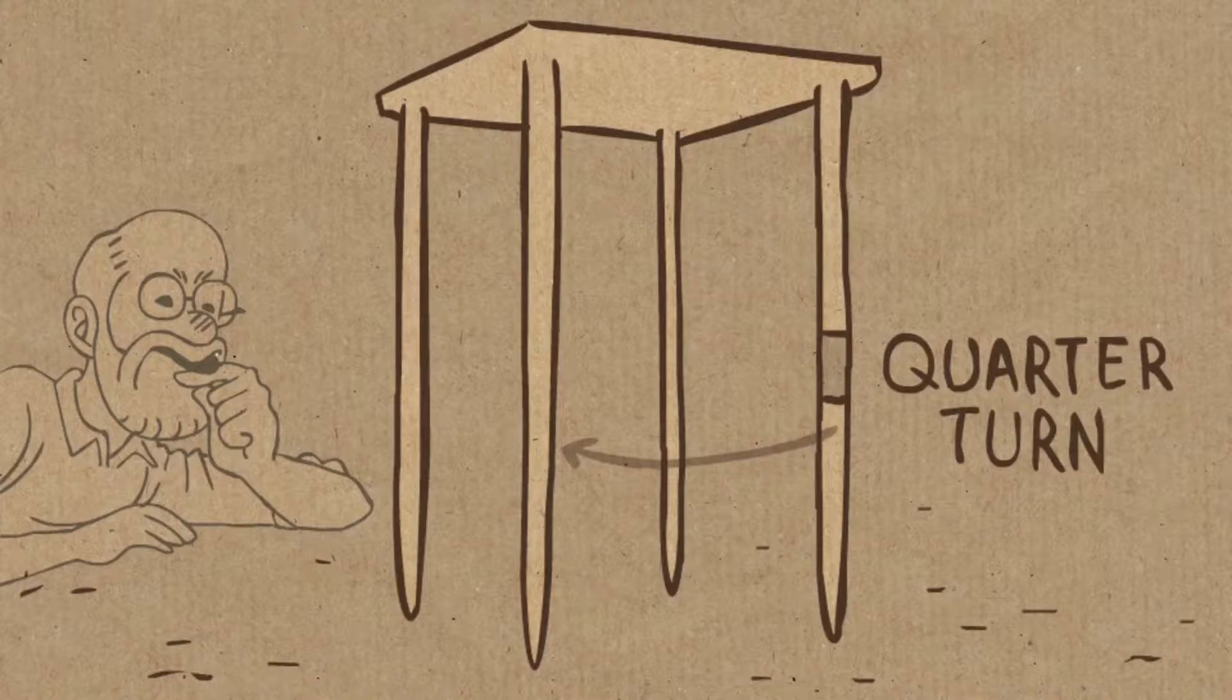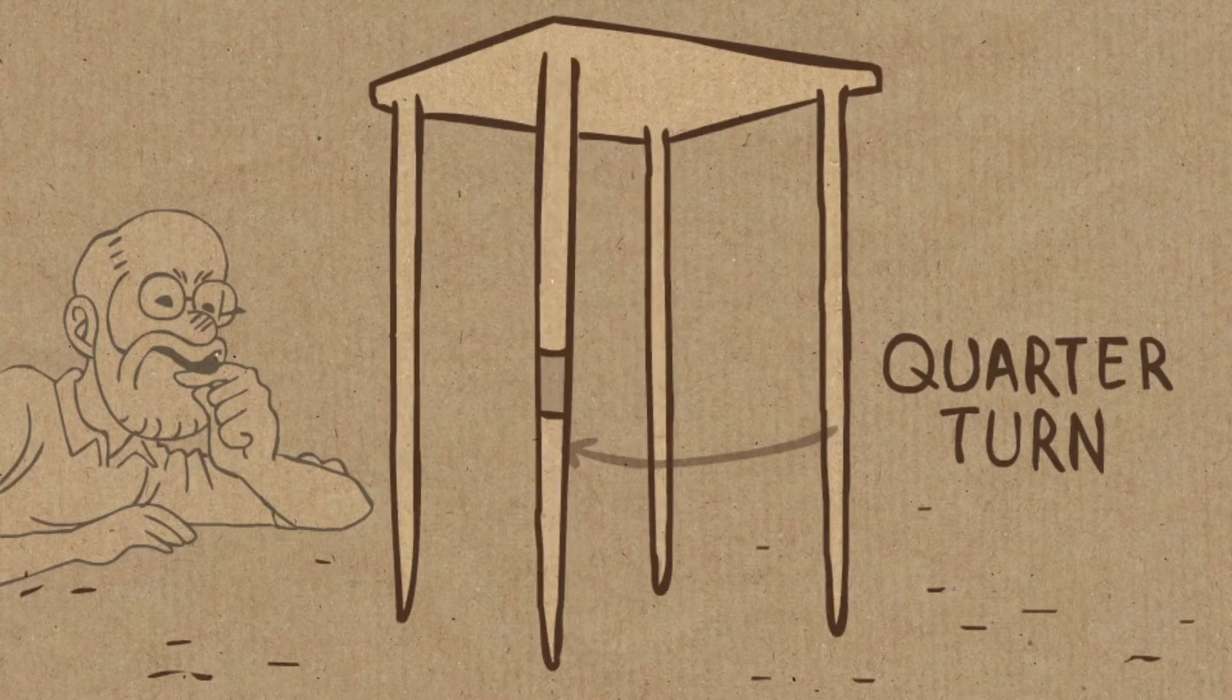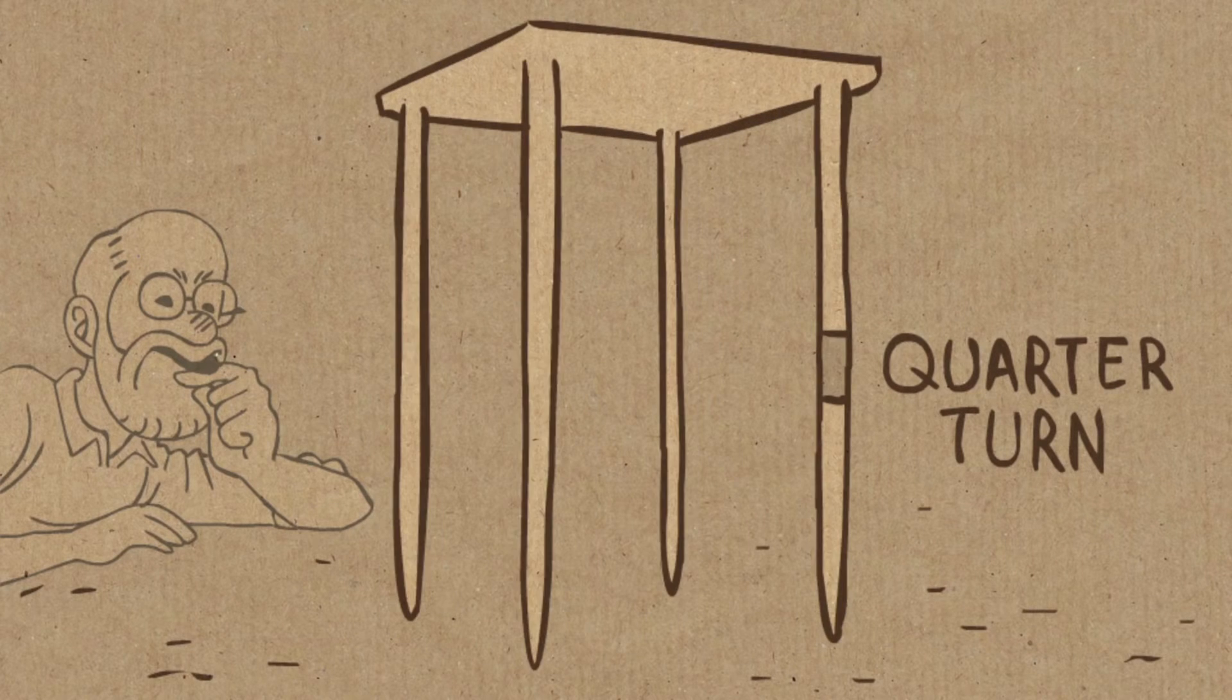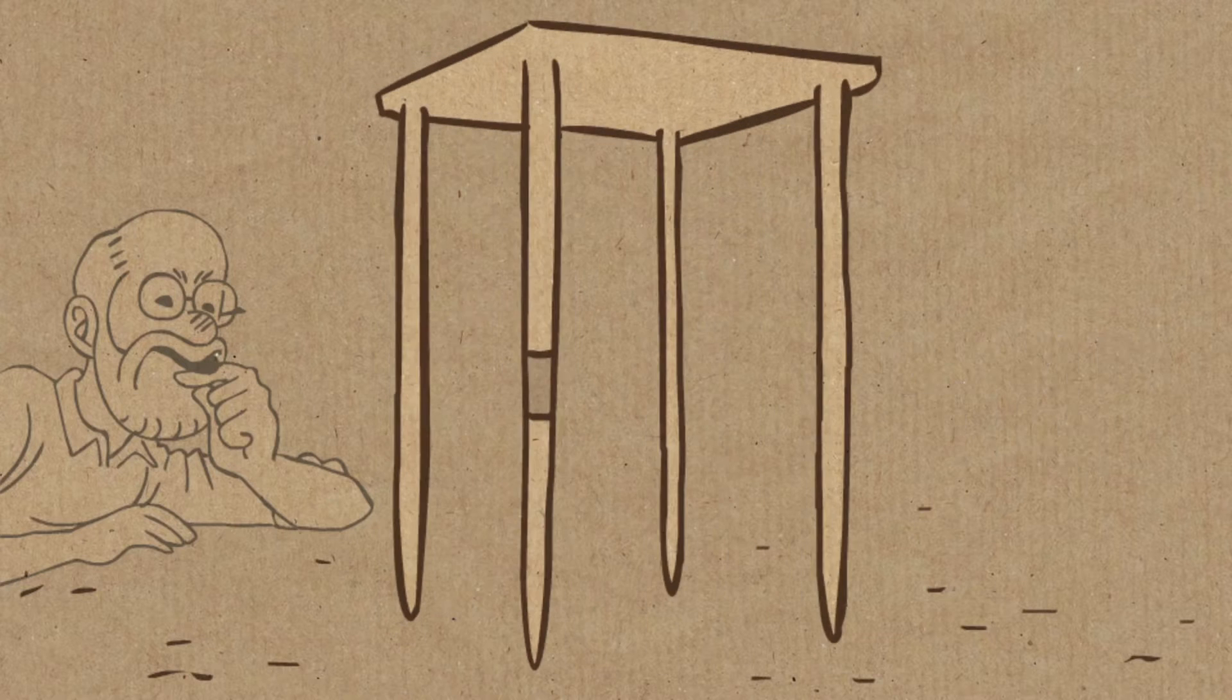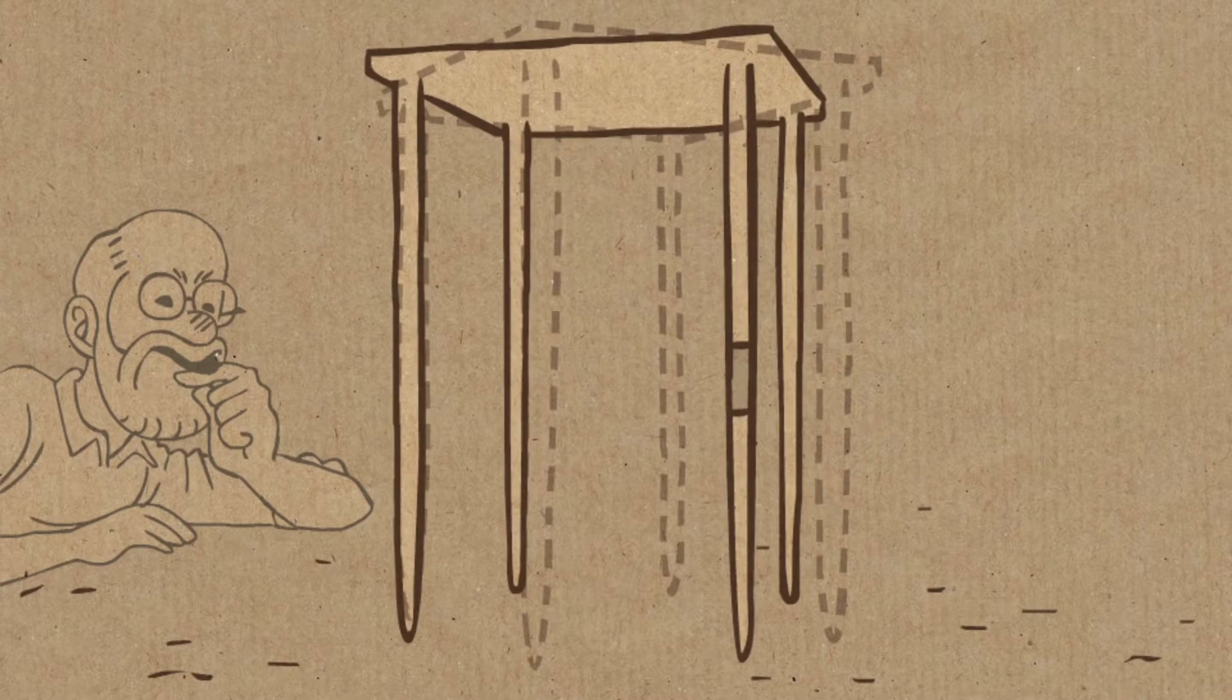Mathematicians never have unstable tables, they know what to do and what you do is very simple. Turn the table, you start moving the table and try to turn it so that you have a quarter of a turn. And on the way of your turning there will be a moment where it's absolutely stable.